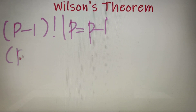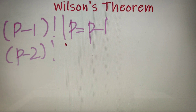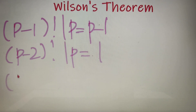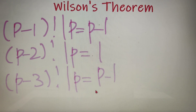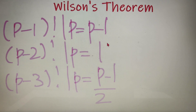In general, when (p-2) factorial is divided by p, the remainder is 1. And when (p-3) factorial is divided by p, the remainder is (p-1)/2. In all three cases, p is a prime number.